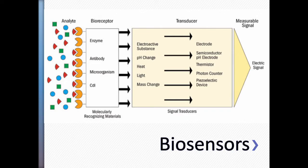The signal can also be heat, light, or even mass change. The usual case for mass change is antibody binding or DNA binding — when binding occurs, the mass changes. You have piezoelectric devices that sense those very small mass changes. Your analyte reacts with your bioreceptor, and the interaction between them creates a signal detected by your transducer, which then converts it to an electrical signal that can be processed by an electronic system.